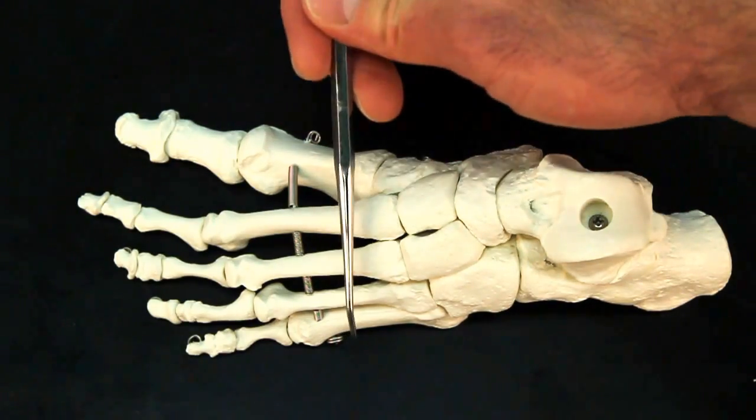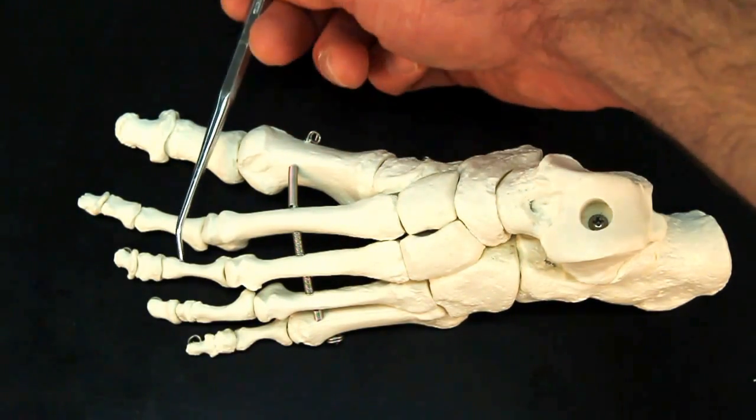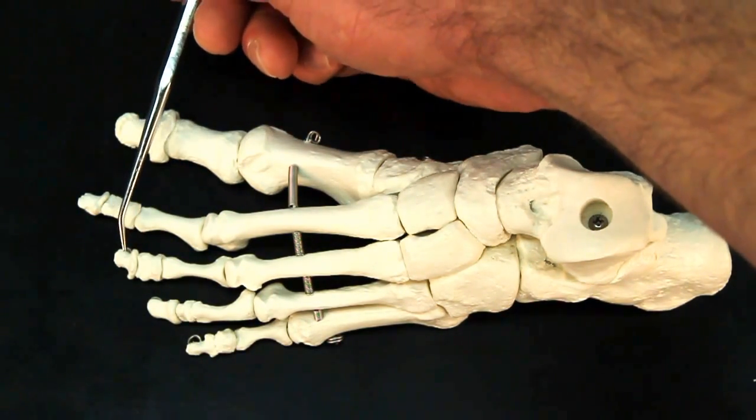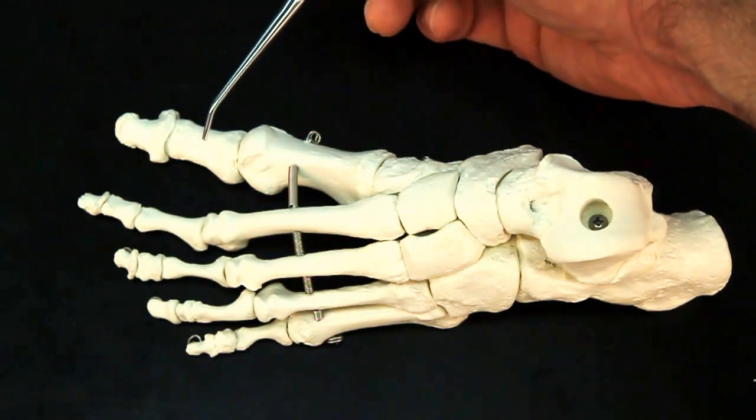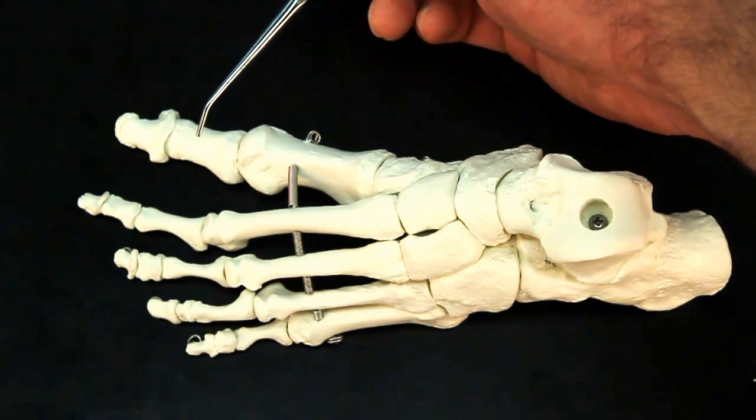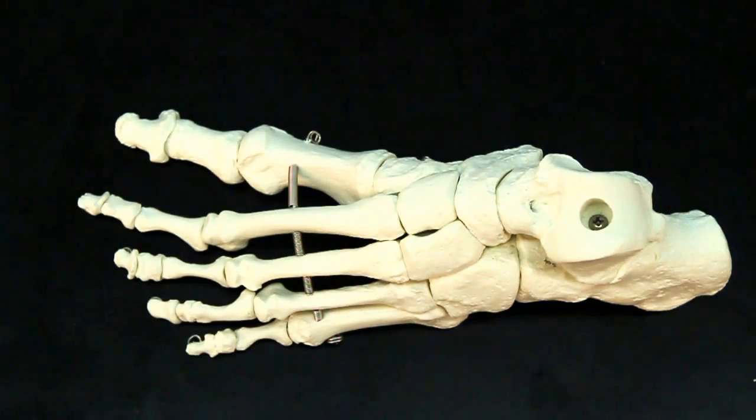So we have our metatarsals, proximal, middle, distal phalanges of toes two through five, but then toe one has only a proximal and distal phalanges. And that's your foot.